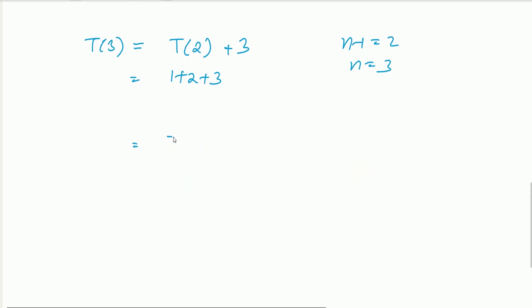Again we will do the same thing. We will put on the right-hand side the value which we know, T(3). So now n-1 equals 3, so n equals 4. This becomes T(4) equals T(3) plus 4. The value of T(3) is 1 plus 2 plus 3 plus 4.